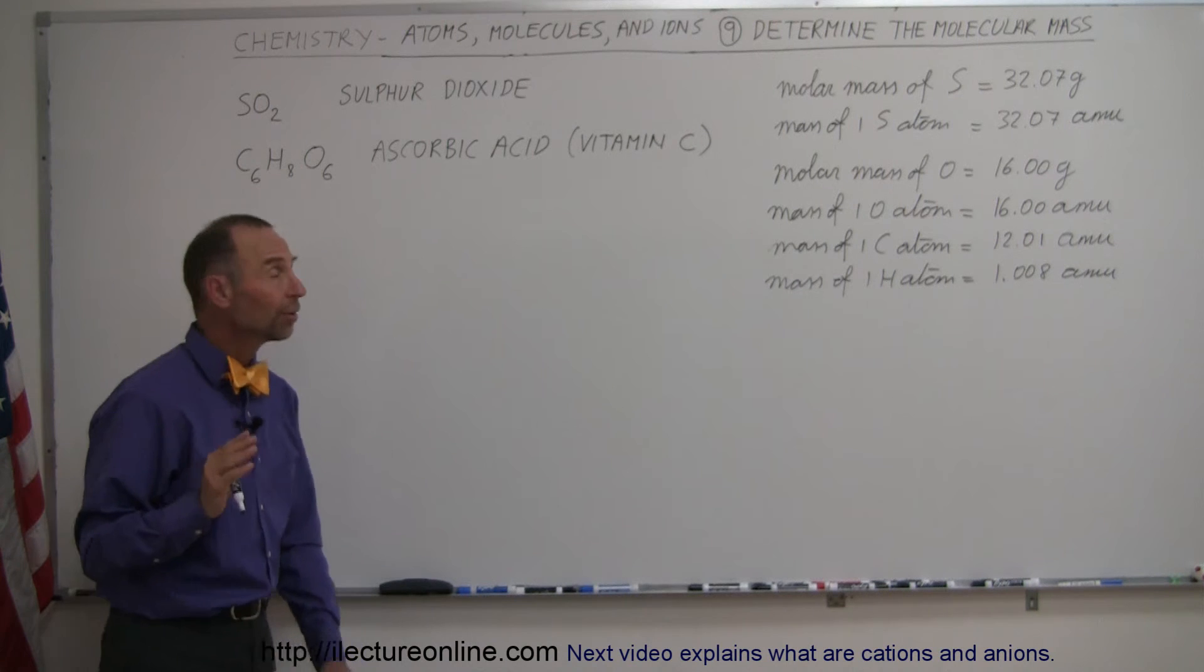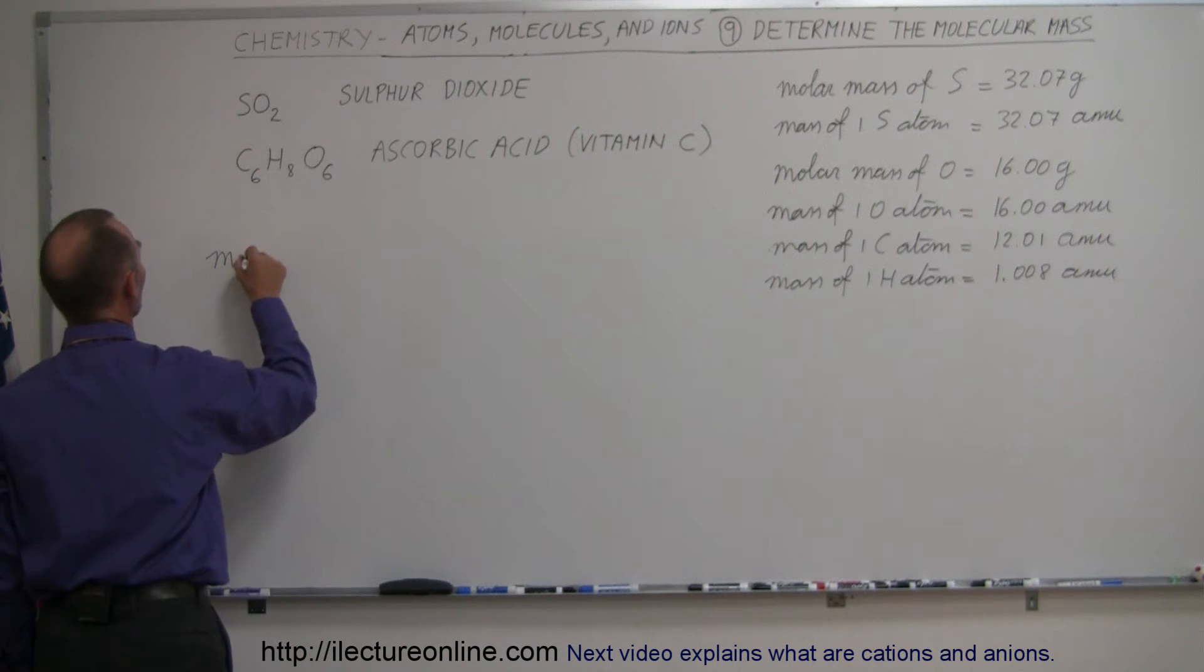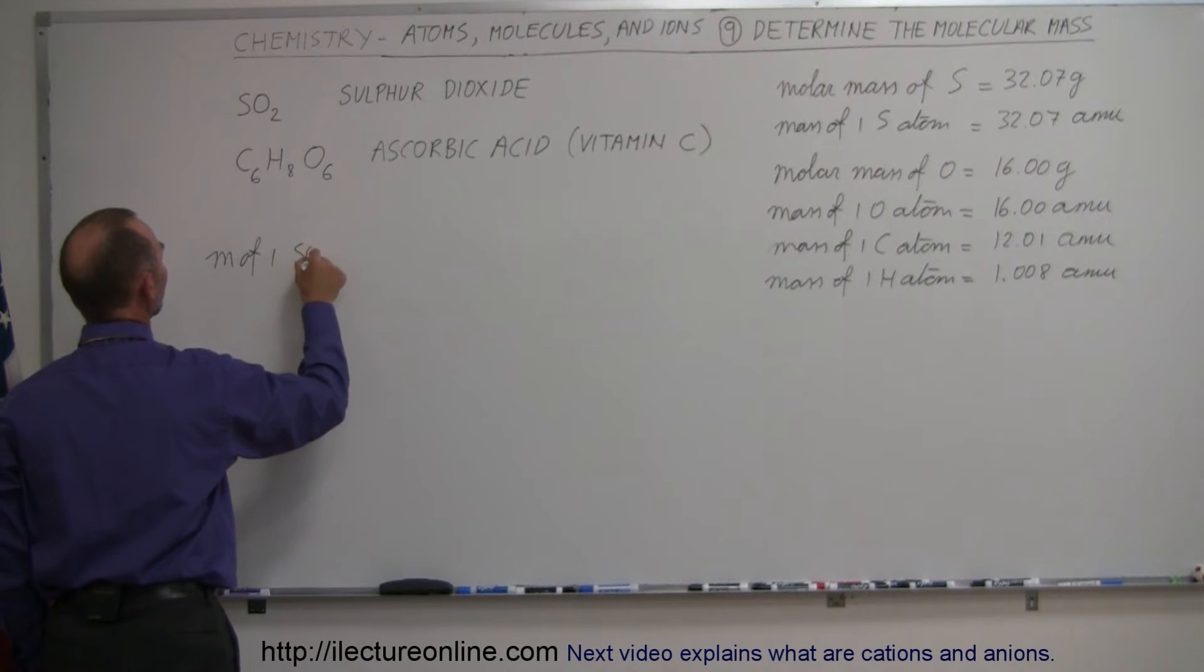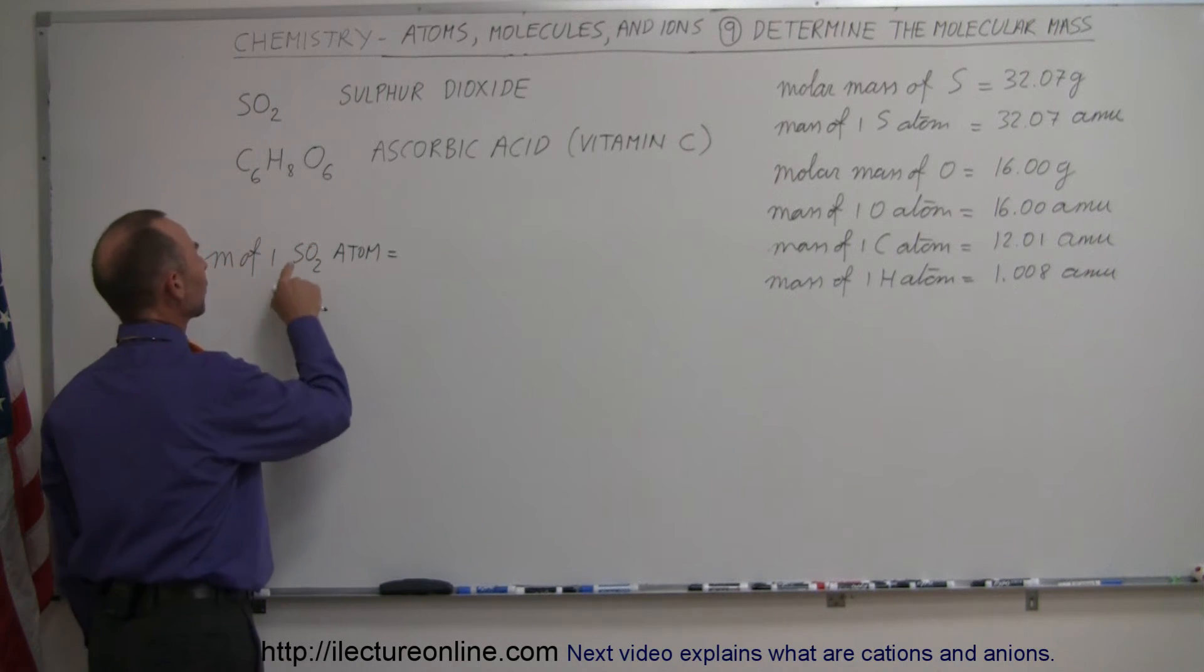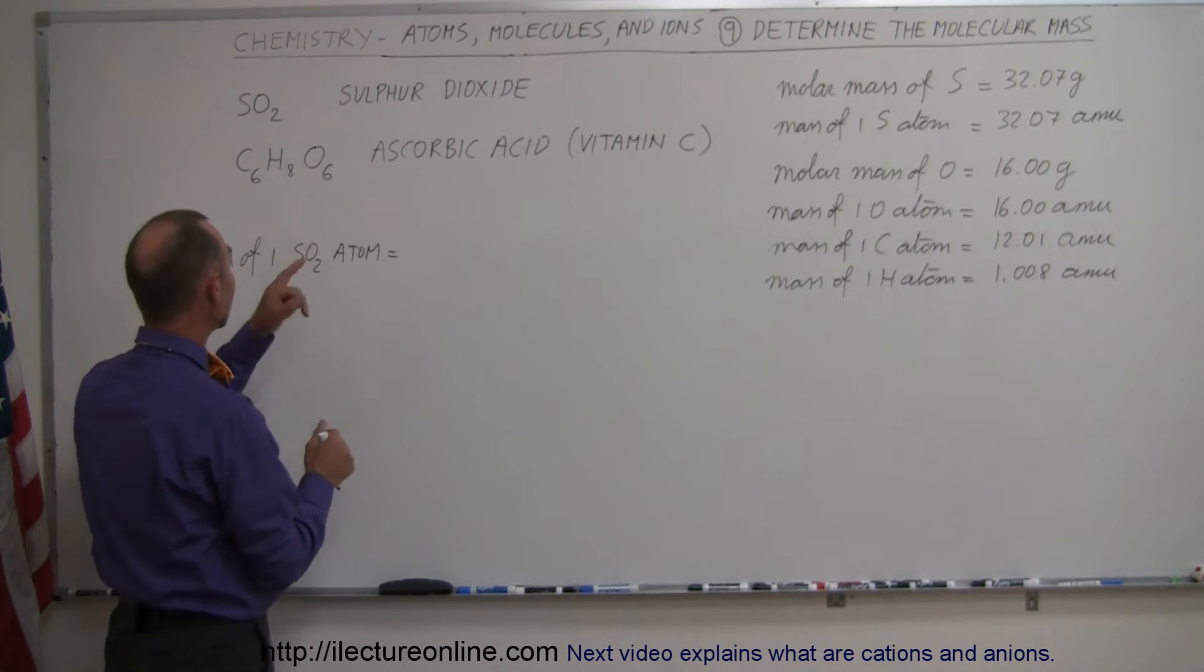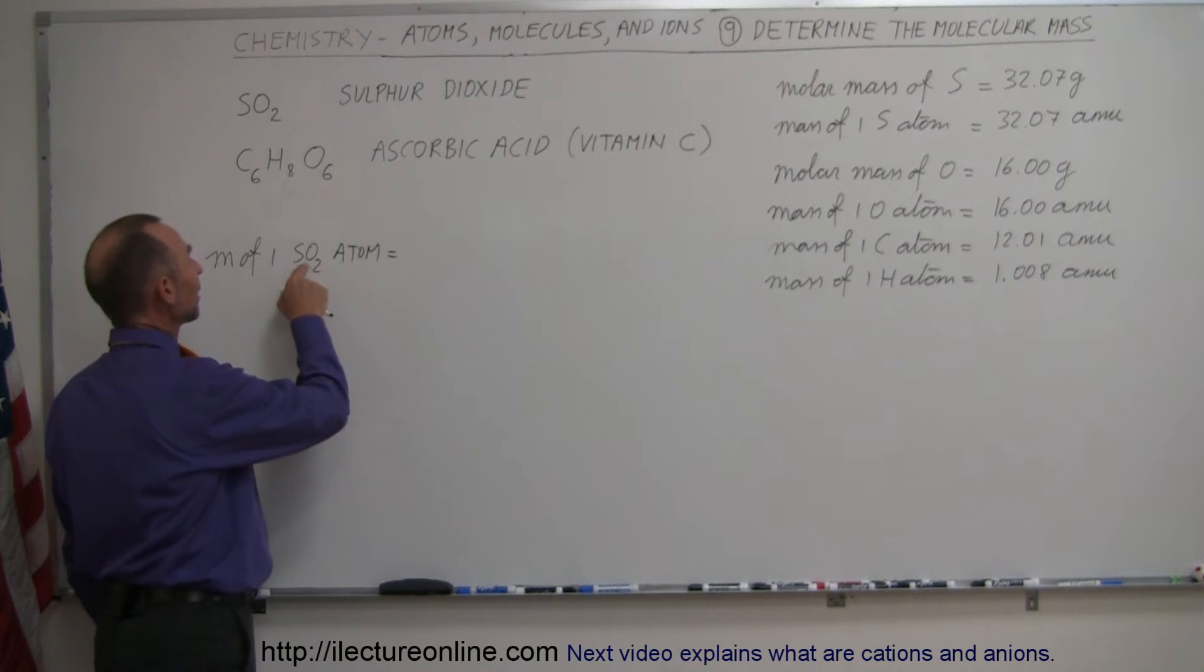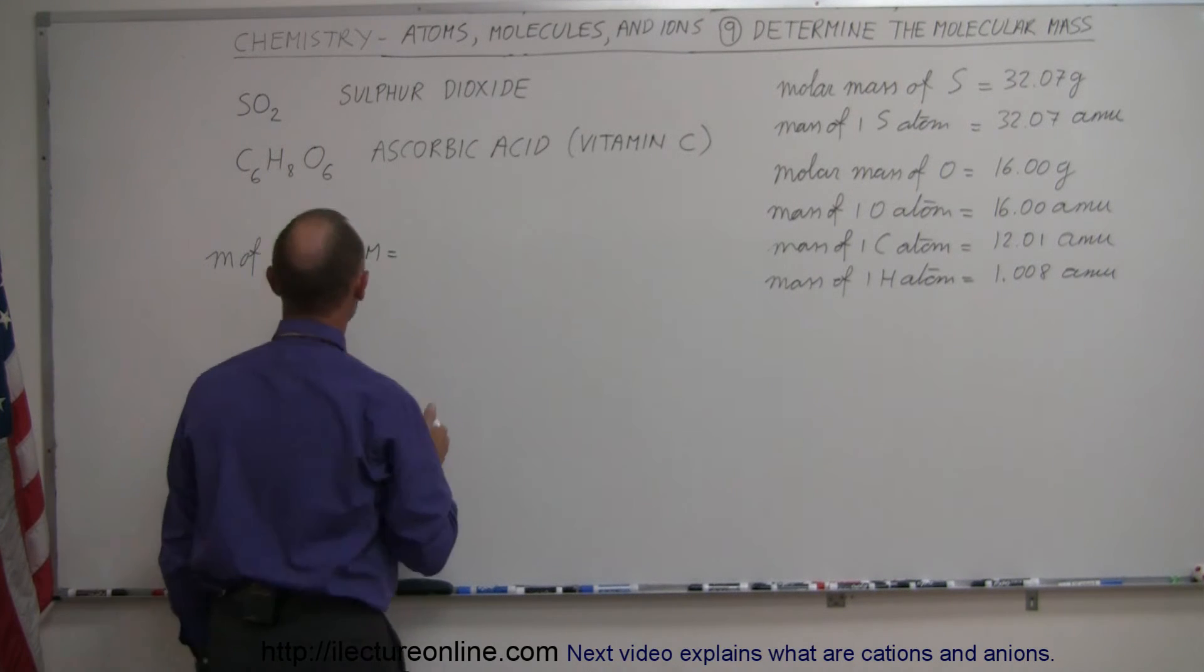Now, if we want to find the molecular mass of, say, sulfur dioxide, the mass of one sulfur dioxide atom, that will be equal to the mass of a single sulfur atom, multiply times 1, because there's only one of those in the molecule, and then we take the mass of an oxygen atom, and multiply that by 2, because we have two oxygens in that particular molecule.